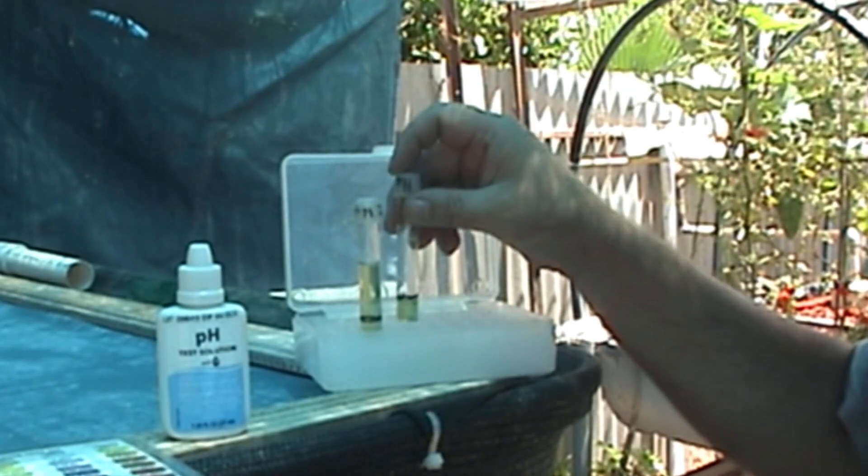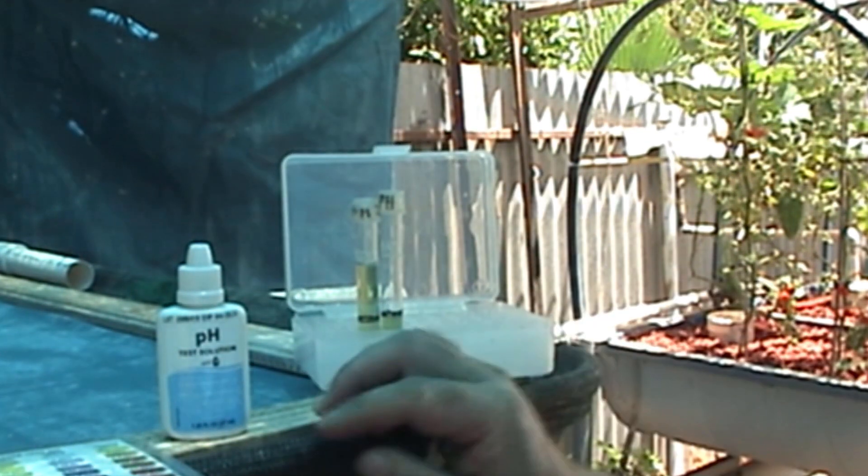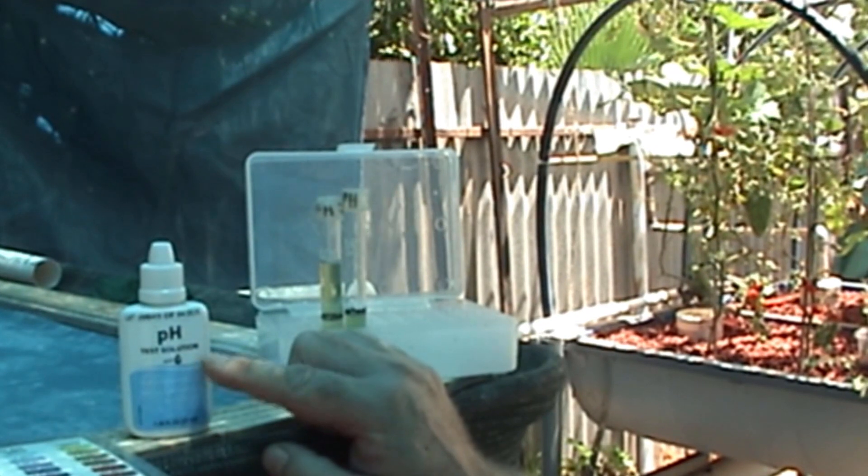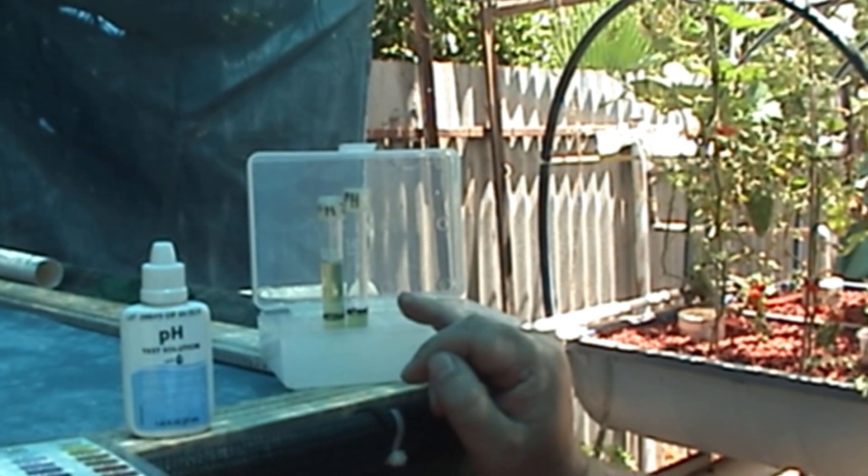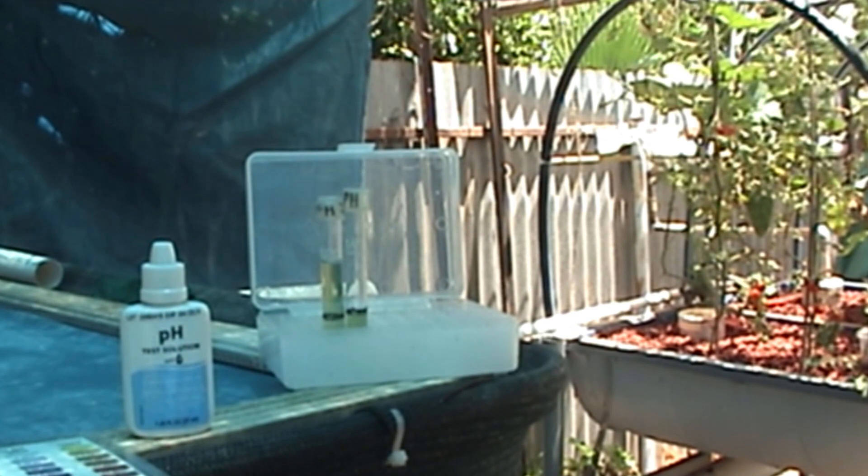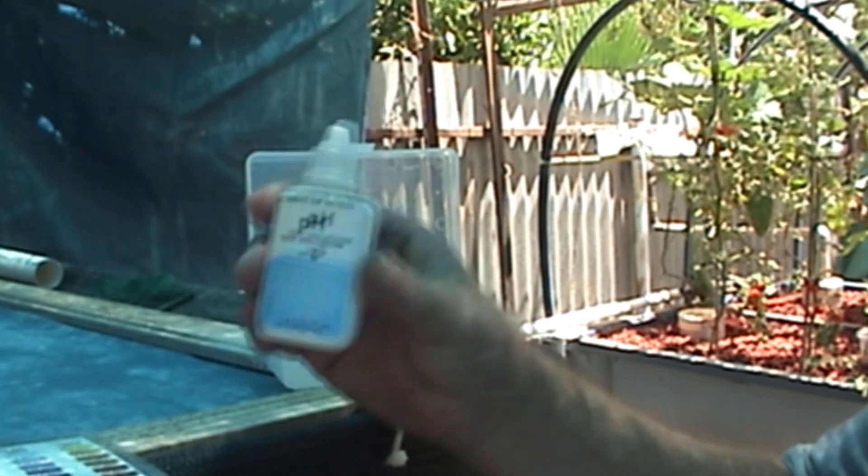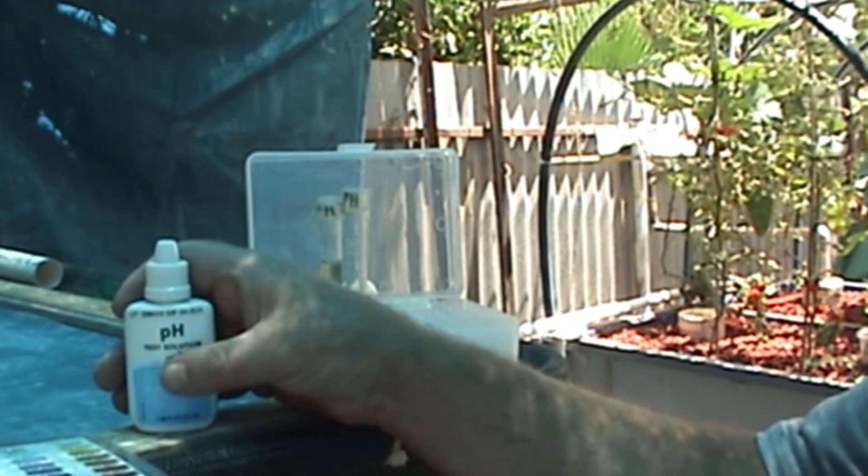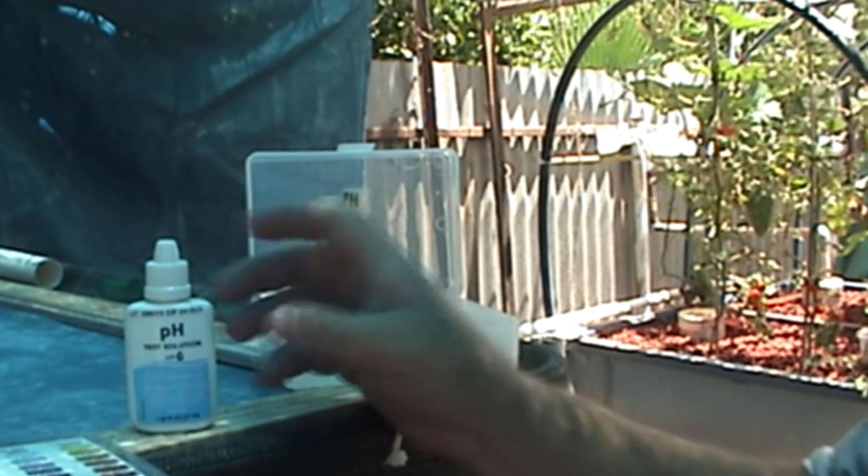That is now reading 6.6. What I've officially done is, instead of putting 3 drops in, I'm putting 1 drop in at 1 and 2 thirds of a mil, which gives me the same test. I'm saving 2 drops out of that 1 test. That's the normal pH. What I'm going to do now is do the high pH.